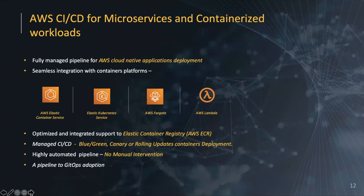AWS CI/CD for microservices and containerized workloads is a fully managed pipeline for AWS cloud native application deployment, with seamless integration with container platforms — whether you're using AWS Elastic Container Service, Elastic Kubernetes Service, AWS Fargate, or AWS Lambda functions. It offers optimized and integrated software through the Elastic Container Registry. You can have blue-green deployment, canaries, or rolling updates for container deployment, with a highly automated, near-zero manual intervention pipeline and integration with GitHub adoption.